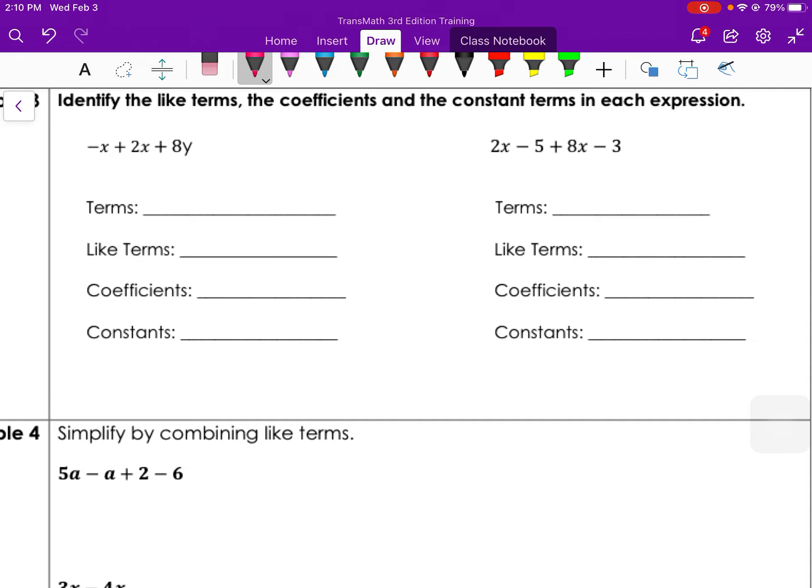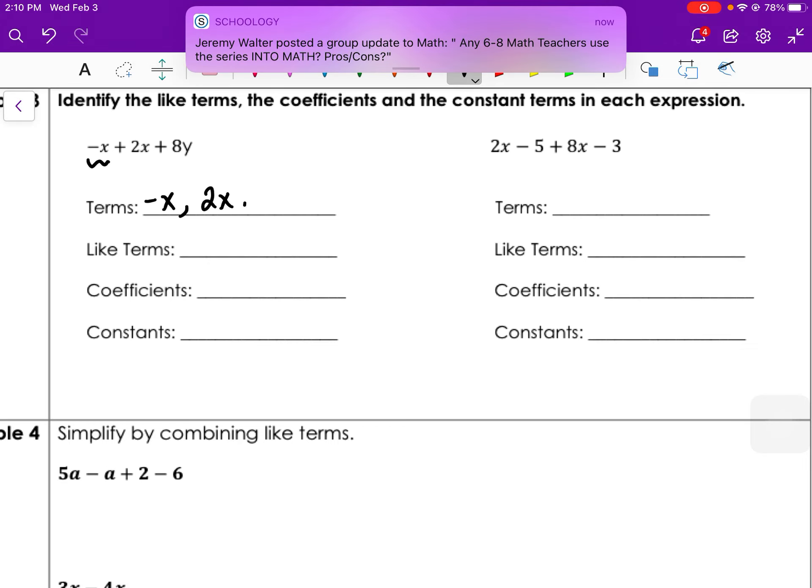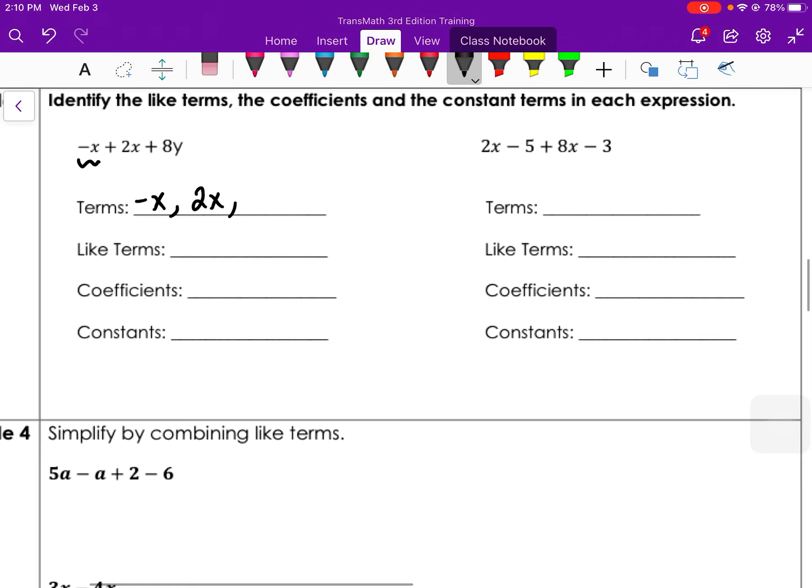Identify the terms, the coefficients, and the constant terms in each expression. So the terms individually, I'm going to put them with parentheses or commas in between. The terms are negative x, 2x, and 8y. So terms are separated by the addition or subtraction. So I have three terms in this expression.